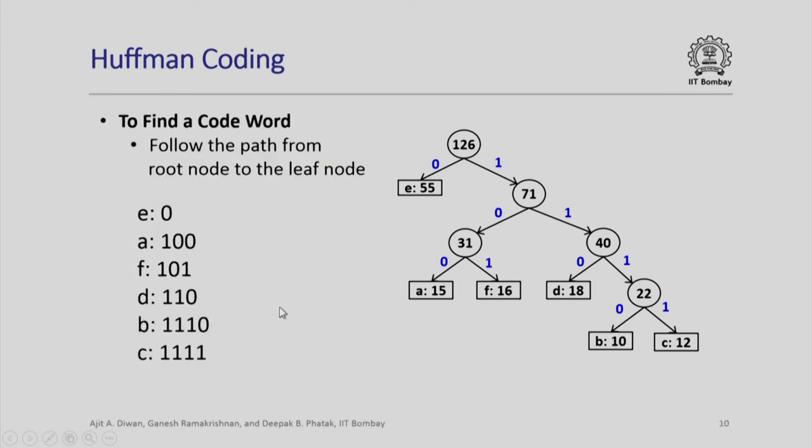Let us look at how do we find a code word. We follow the path from the root node to the leaf node. We traverse it, we come across this leaf node E, we simply assign the value 0. If we want to look at A, we will have to traverse the path 1 0 0. This becomes the code for A. Similarly, 1 0 1, 1 1 0, 1 1 1 0, 1 1 1 1. These are the different codes that we can use for representing these different symbols.